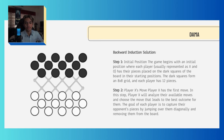Backward induction solution in Dama: The game begins with an initial position where each player has their pieces placed on the dark squares, forming an 8x8 grid with 12 pieces each. Player X has the first move and will analyze their available moves, choosing the move that leads to the best outcome. The goal is to capture the opponent's pieces by jumping over them diagonally and removing them from the board.